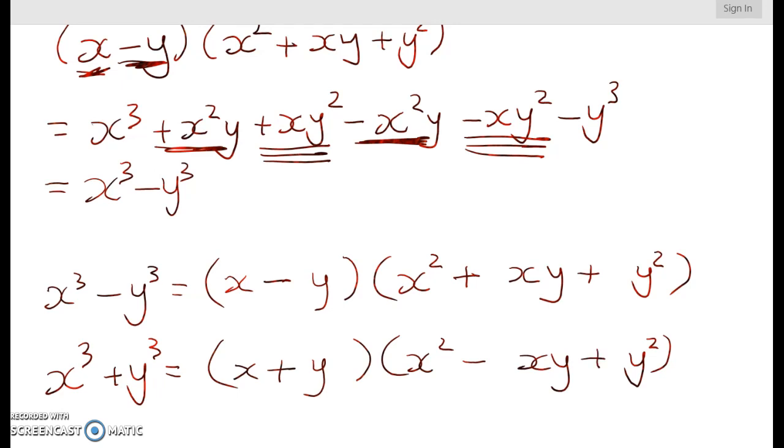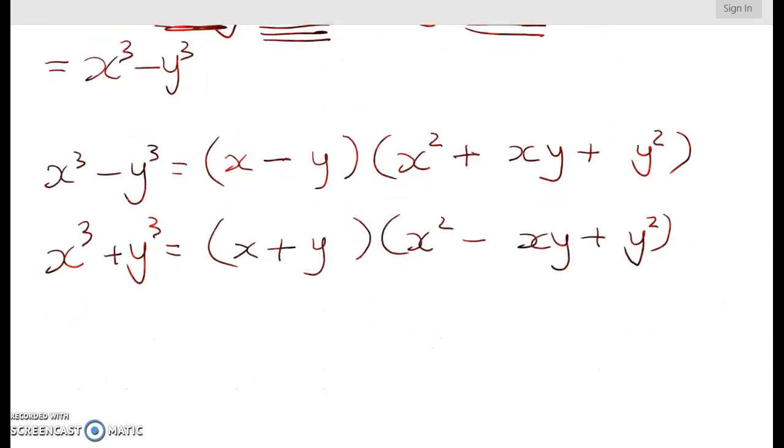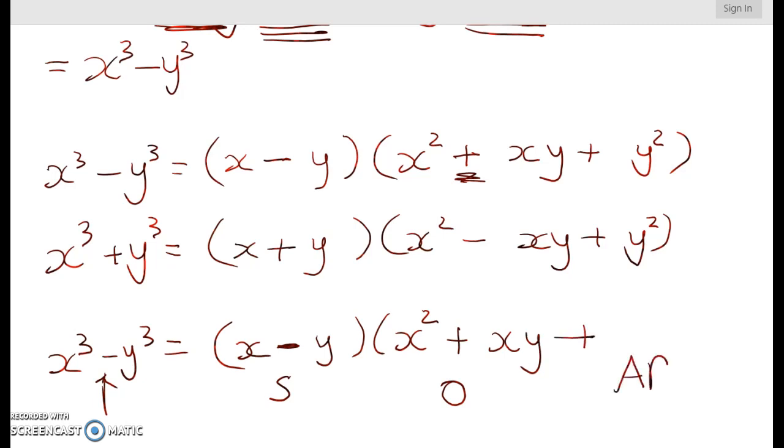And the way that I'm remembering it is this. For the difference of two cubes we start off and it's the same sign as what I've got in here. Same. S for same. For the next sign it's the opposite. And then I have my xy and for the last one it's always positive.